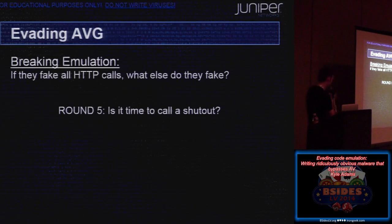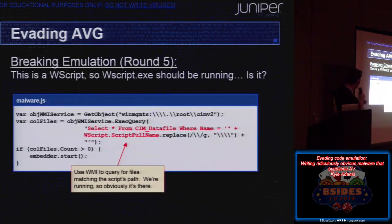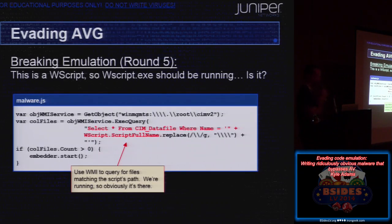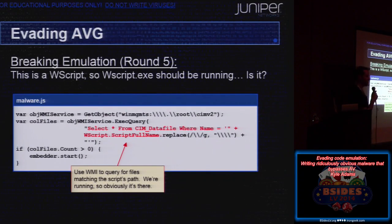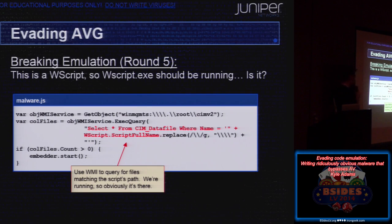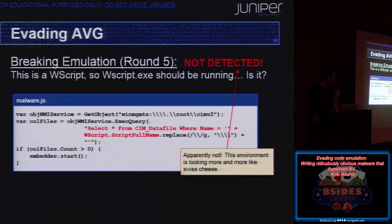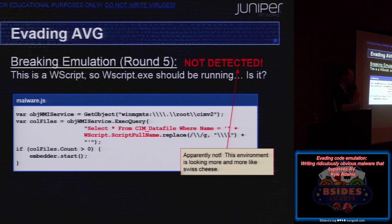Next, we go after WMI — Windows Management Interface — the interface for SQL-like queries against data about the operating system, including file indexes. That's a pretty hard thing to emulate. We check to make sure the script that's running right now actually exists on disk where it's supposed to be. If it's running, it's obviously on disk. Not detected. AVG returns every WMI call with zero results regardless of what it is. So checking whether wscript was running also worked because everything comes back zero.